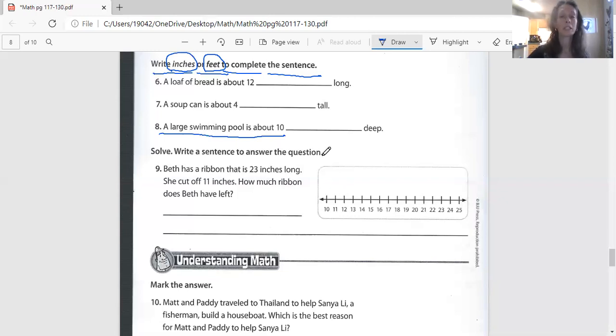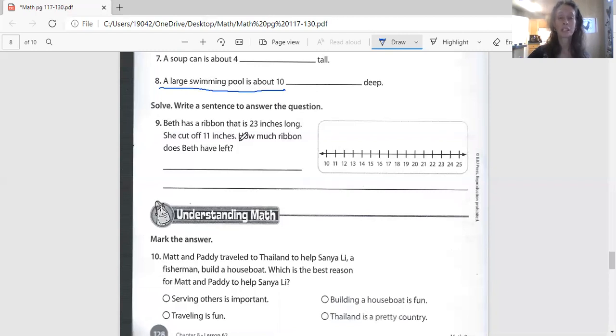This is the one we did yesterday. So I'm going to have you do a lot of stuff on this. You're really going to have to listen up to your directions on this one. We'll read it together. Listen and repeat the directions. Says, solve. Write a sentence to answer the question. Here's my problem. It says, Beth has a ribbon that is 23 inches long. She cut off 11 inches. How much ribbon does Beth have left?